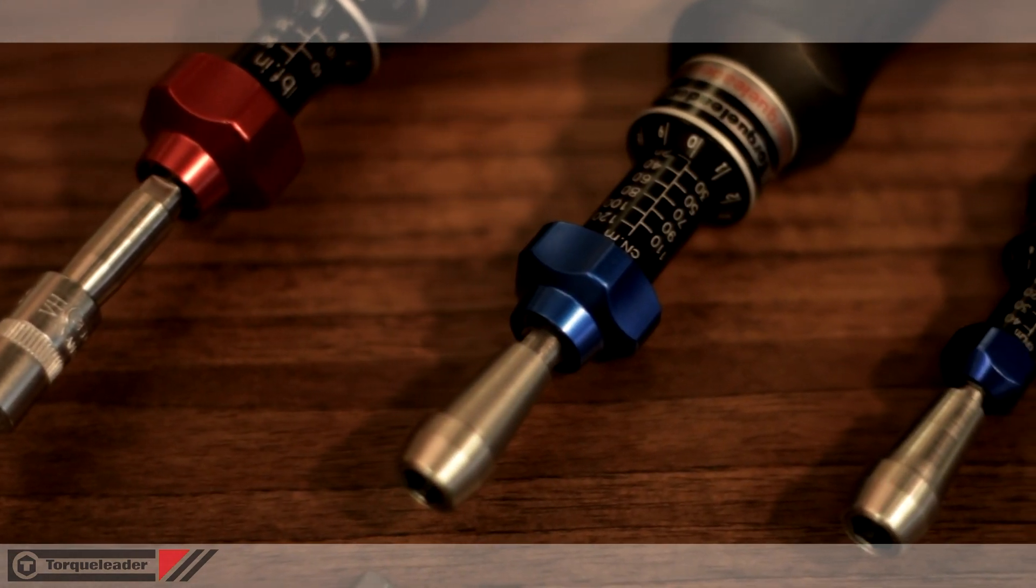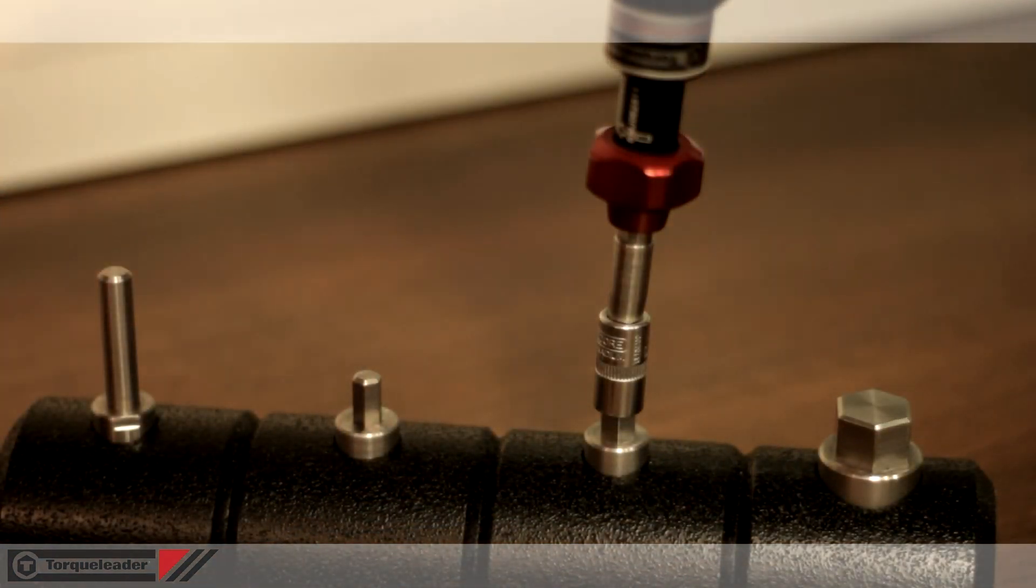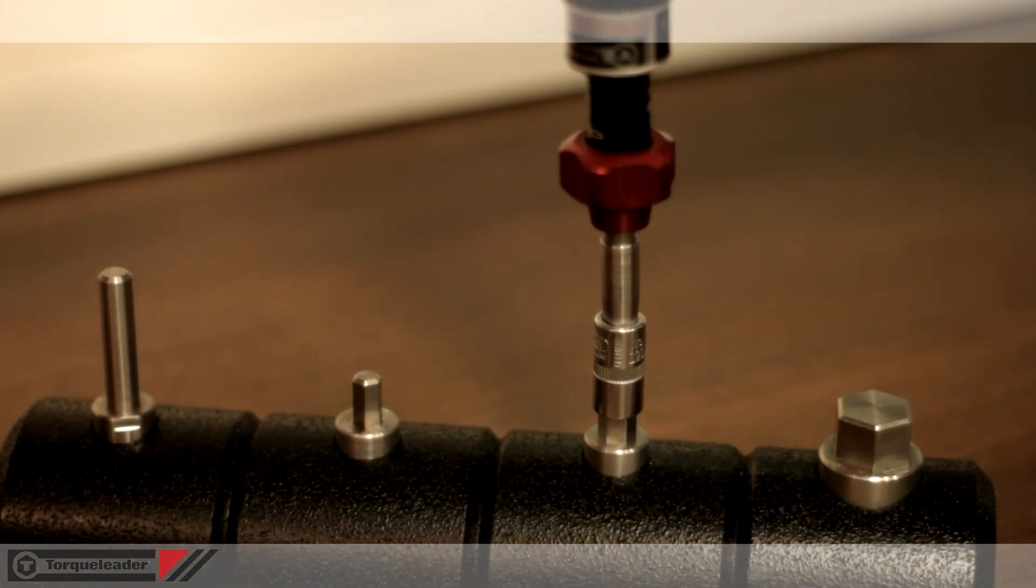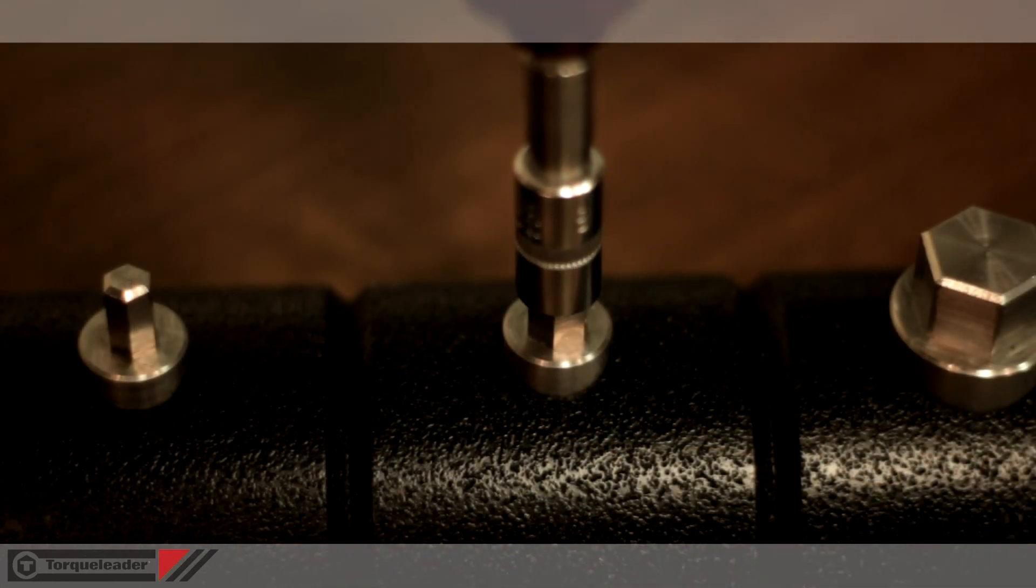At low torques, the risk of over tightening is increased. With the ergo quickset, this risk is eliminated by the slip free mechanism, making it impossible for the operator to apply more than the set torque value.